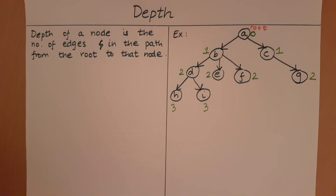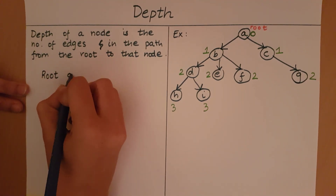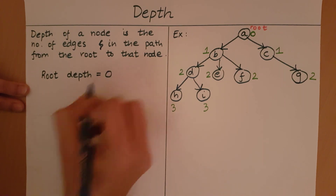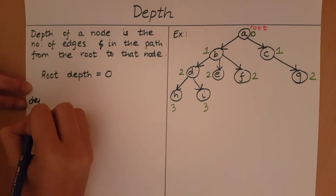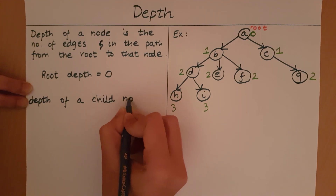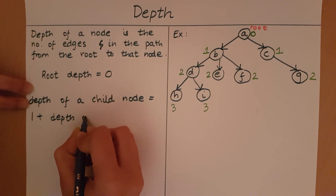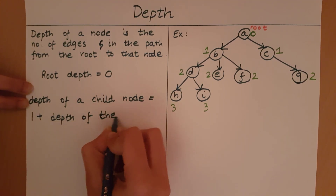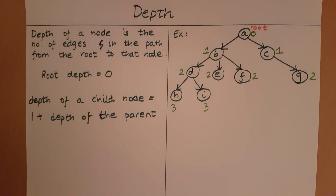So to summarize: the root has a depth of zero, and the depth of any child node is equal to one plus the depth of its parent node. Using this logic, you can find out the depths of all the nodes in a given tree.